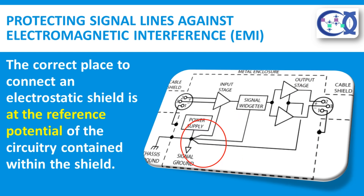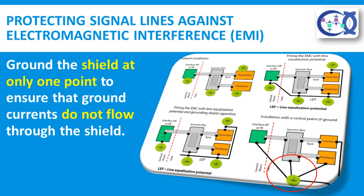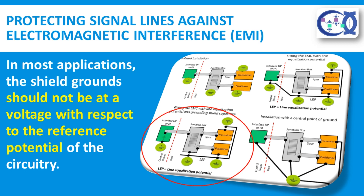The correct place to connect an electrostatic shield is at the reference potential of the circuitry contained within the shield. This point will vary depending upon whether the source and receiver are both grounded or whether one or the other is floating. It is important to ground the shield at only one point to ensure that ground currents do not flow through the shield. In most applications, the shield grounds should not be at a voltage with respect to the reference potential of the circuitry. If it is, then this voltage can be coupled to the shielded conductor. The exception is when using guard shields, where the shield is intentionally held at a potential to prevent current flow in an unbalanced source impedance.